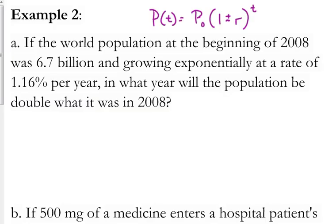Let's plug in the specifics here. Our initial population is 6.7 billion, just write in 6.7, and know that your answer is going to be in billions. Don't put the nine zeros that come with a billion. Times 1, it's growing, so it's going to be plus.